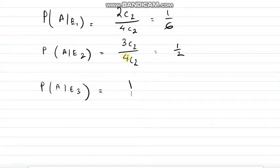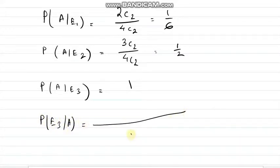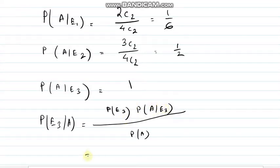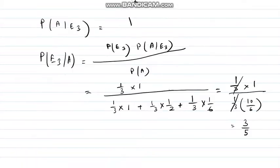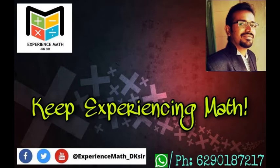We need to find P(E3|A) — the probability that all balls are white given the 2 drawn balls are white. By Bayes' theorem, P(E3|A) = P(E3) × P(A|E3) divided by P(A), where P(A) = P(A|E1)×P(E1) + P(A|E2)×P(E2) + P(A|E3)×P(E3). Putting in all values gives us the final answer. That's it for Bayes' theorem — we have done 3 to 4 sums. Practice and let me know if there is any doubt. Thank you.